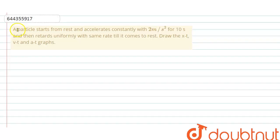Hello everyone, let me explain this question. A particle starts from rest and accelerates constantly with 2 m per second squared for 10 seconds, then retards uniformly with the same rate till it comes to rest. Draw x-t, v-t, and a-t graphs.